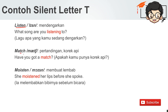Lalu T mengikuti 'ch' sound — kita hilangkan juga T-nya: 'match' — pertandingan atau korek api. Have you got a match? Apakah kamu punya korek api? Selanjutnya, T diawali S: 'moisten' — membuat lembab. She moistened her lips before she spoke. Ia melembabkan bibirnya sebelum bicara.